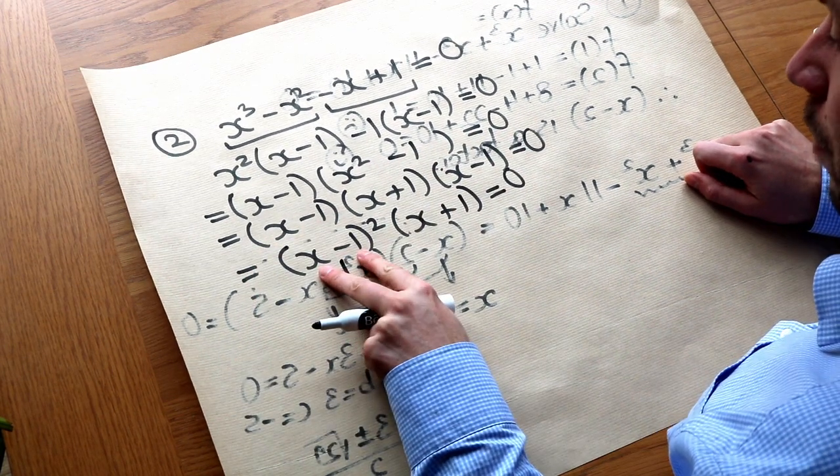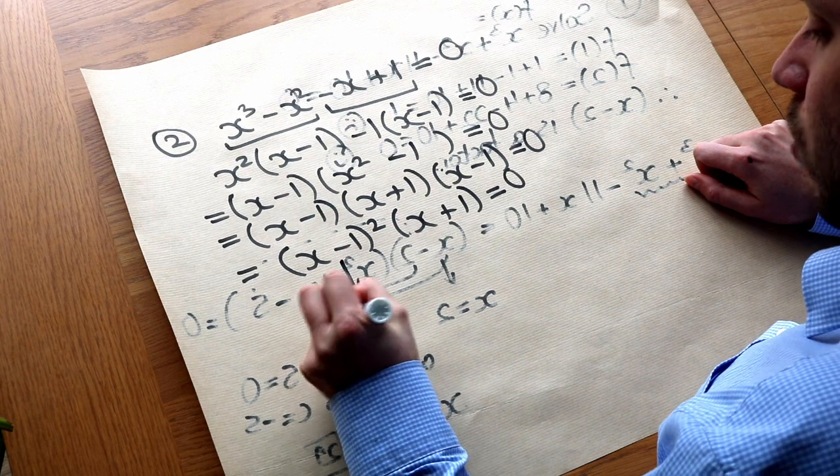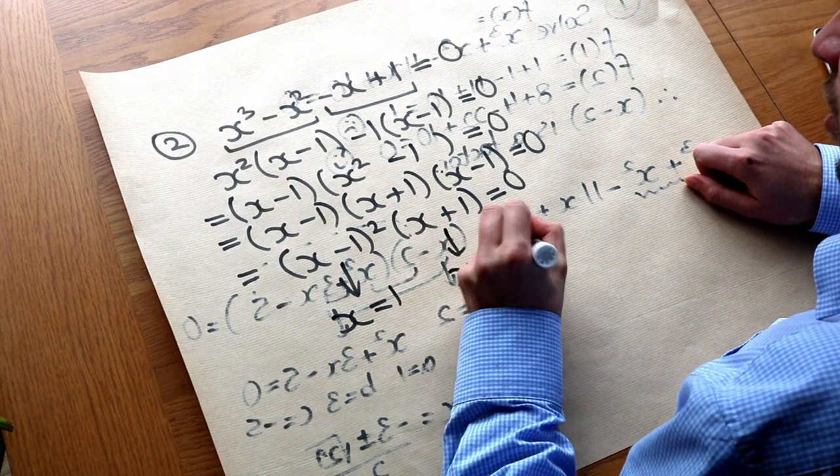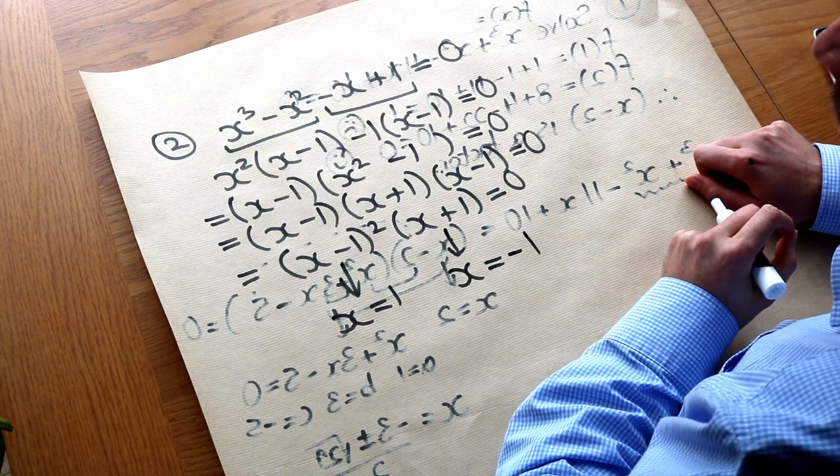And that means if this bracket is zero, then x is equal to one. And if this bracket is zero, then x is equal to minus one. And we have found all the solutions to this cubic.